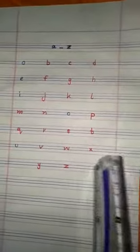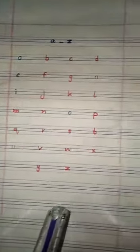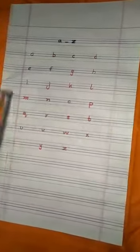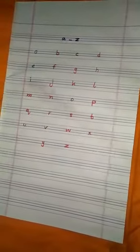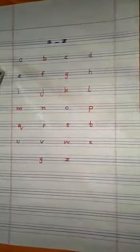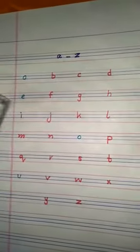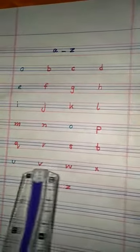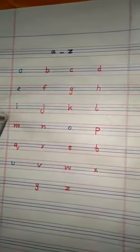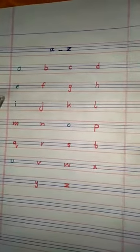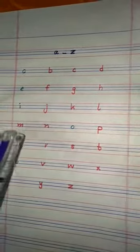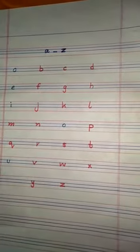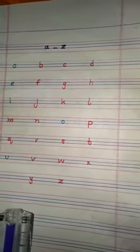Now students, as you can see in these letters, I have written the vowels in blue colors: A, E, I, O, U, and other letters are in red colors. Vowels are five: A, E, I, O, U. And now students, I will write vowels and consonants on our hand.